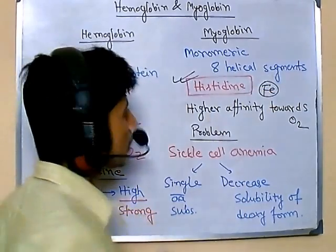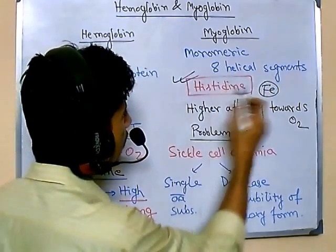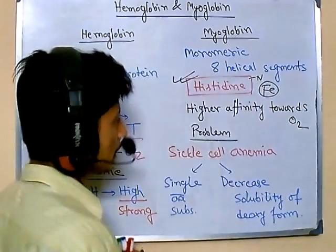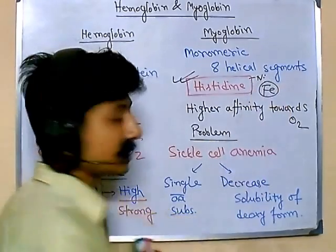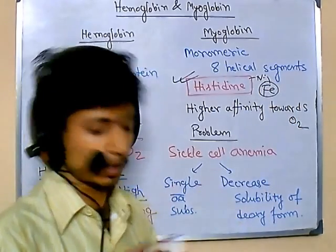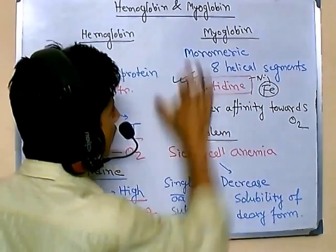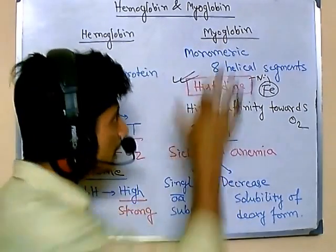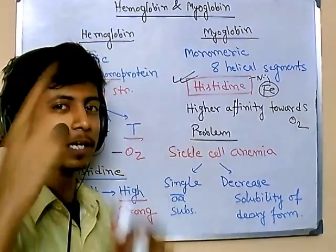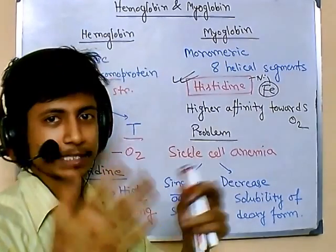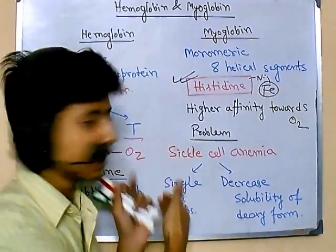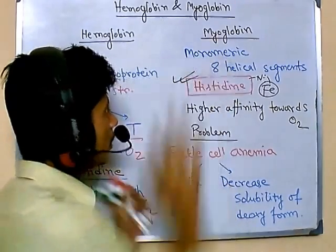The histidine in myoglobin has an imidazole nitrogen with a lone pair of electrons that helps attach to the iron, making the structure stronger. Importantly, myoglobin has a higher affinity towards oxygen than hemoglobin. If you look at the graph of how they interact with oxygen, you find myoglobin consistently shows higher oxygen affinity than hemoglobin.